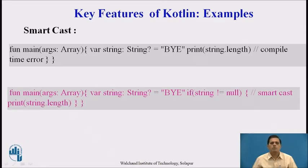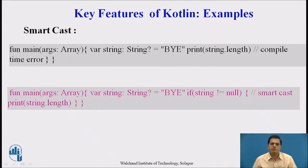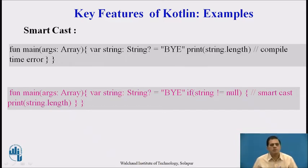Next, smartcast: it explicitly typecasts immutable values and inserts them in a safe cast automatically. If we try to access a nullable string type, such as 'String? = by', without a safe cast, it will generate a compiler error. The correct approach is to declare 'String? = "by"' and check 'if string != null', which then compiles successfully.